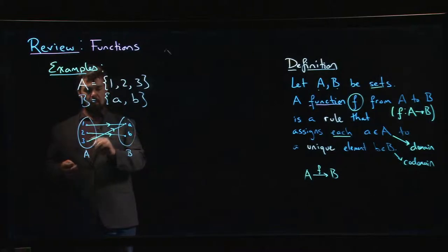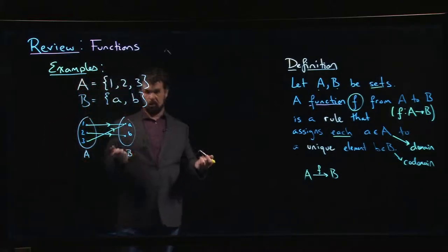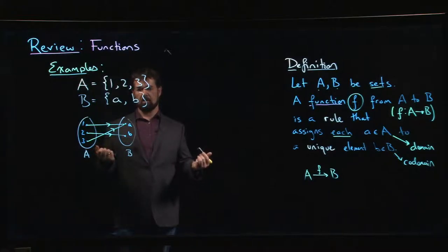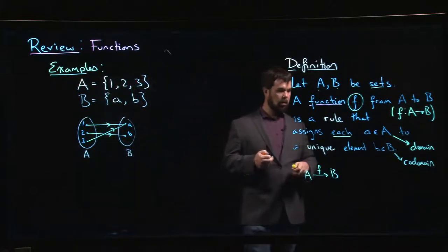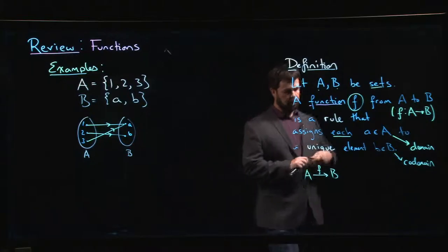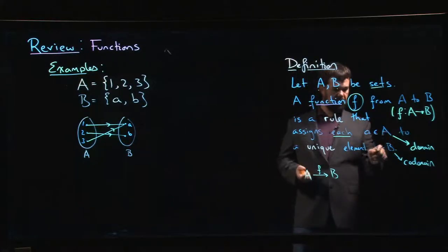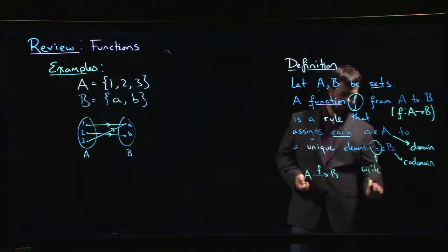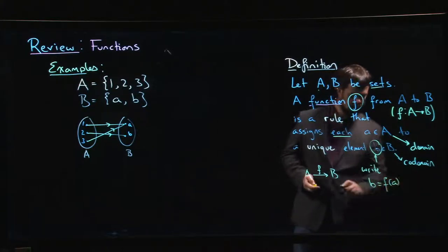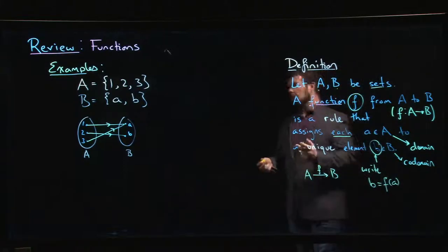This property - if you're concerned about this - this is where this notion of a function being one-to-one comes in, and we might talk about that later. Another notation you're probably familiar with is that if you have an element A assigned to an element B, then usually you would express this by saying that B equals f of A.